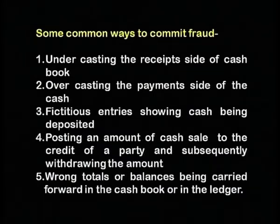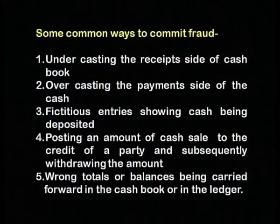Another way to commit fraud is wrong totals or balances being carried forward in the cash book or in the ledger. The auditor has to give particular attention that these basic entries are checked, vouched and done on his behalf by the staff, usually comprising of the article and audit clerks, who shall be checking each aspect of the cash totalling and casting part.